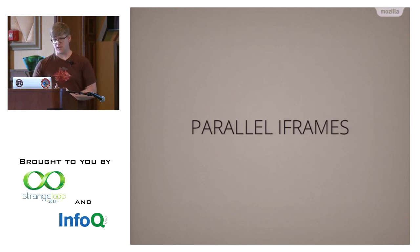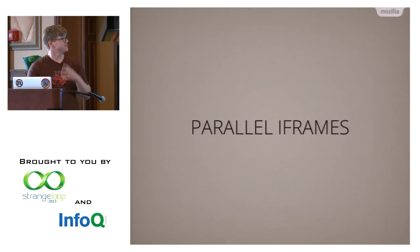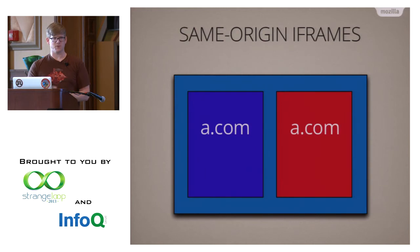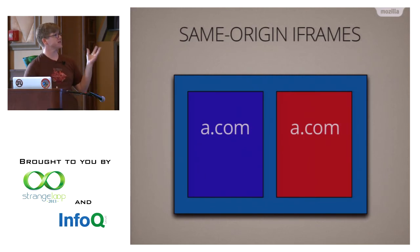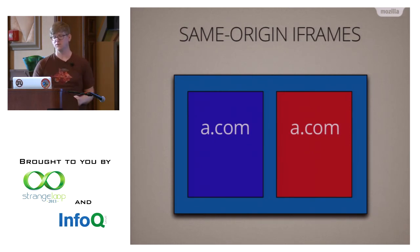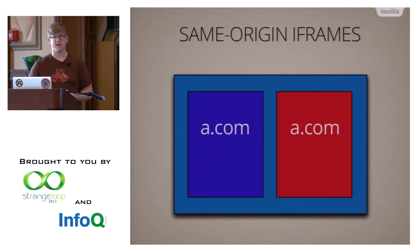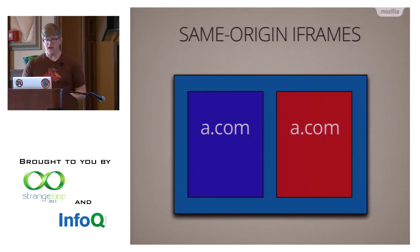Another thing we just got the initial version working is parallel iframes. Iframes let you put a web page inside another web page. There are two cases: first, iframes from your own site — an outer page with two iframes, all from the same site. When they're from the same site, they get to interact with each other. And because they can interact with each other, you can't run them in parallel — you have to run them in the exact same JavaScript runtime.